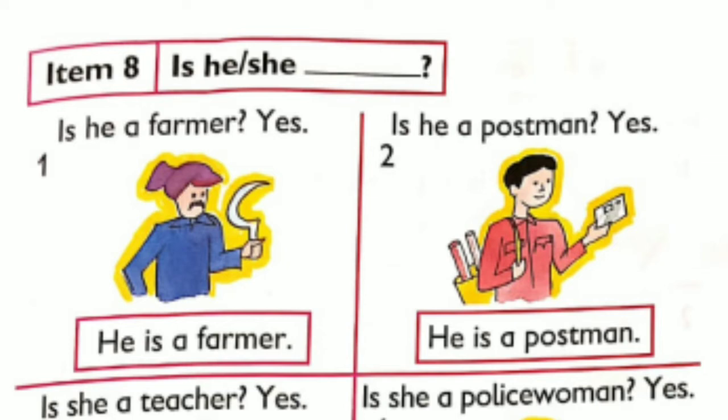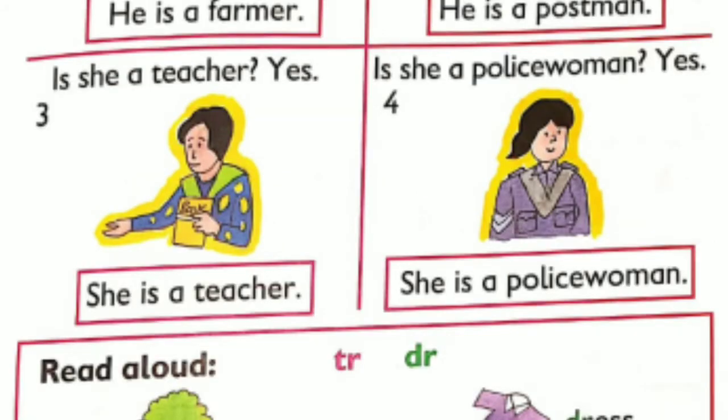Is she? Is he? Is he a farmer? Yes, he is a farmer. Is he a postman? Yes, he is a postman. Is she a teacher? Yes, she is a teacher. Is she a policewoman? Yes, she is a policewoman.